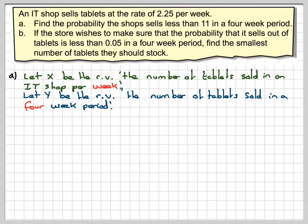However, we're interested in a four-week period. So we're going to let Y be the random variable of the number of tablets sold in a four-week period. Therefore, Y is Poisson 4 times 2.25, which is Poisson 9.